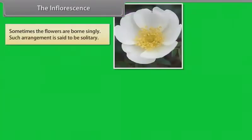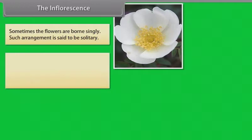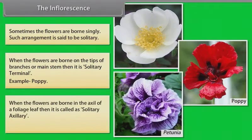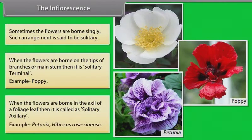Sometimes the flowers are borne singly; such arrangement is said to be solitary. When the flowers are borne on the tips of branches or main stem, it is solitary terminal. When the flowers are borne in the axil of a foliage leaf, it is called solitary axillary. Examples include Petunia and Hibiscus rosa-sinensis.